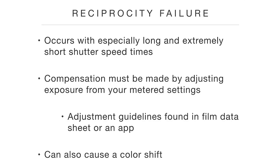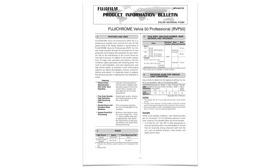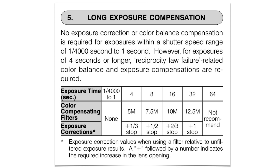Let's look at a film datasheet. I went to Google and typed in 'Fuji Velvia 50 film datasheet' and found a free PDF download. Within it there's a section called Long Exposure Compensation. It says no exposure correction or color balance compensation is required for exposures within a shutter speed range of one four-thousandth of a second to one second. So as long as your shutter speed is between one second and one four-thousandth, you don't have to worry about reciprocity failure. However, for exposures of four seconds or longer, reciprocity law failure related color balance and exposure compensations are required.